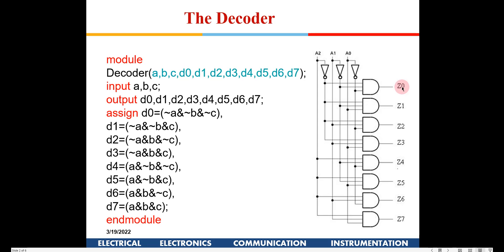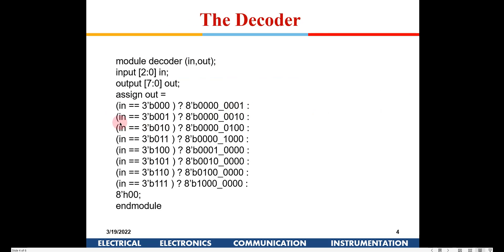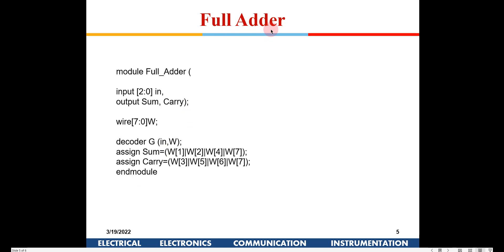If in is equal to 3'b001, the second output line will be high, then the third, then the fourth, and so on. It is good practice to also write a default condition. Although all eight combinations are covered, if for any reason none of the inputs match, the output will default to a safe value.